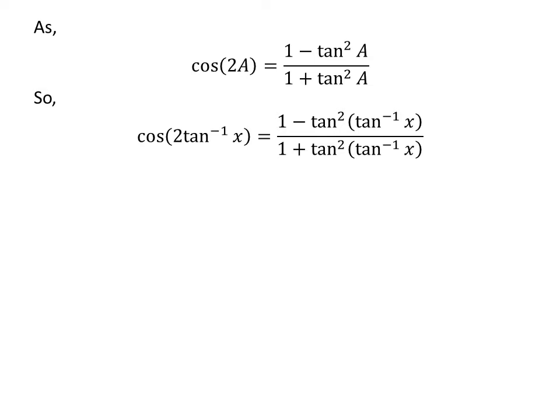So, cosine of 2 times arctangent of x is equal to 1 minus square of tangent of arctangent of x upon 1 plus square of tangent of arctangent of x.